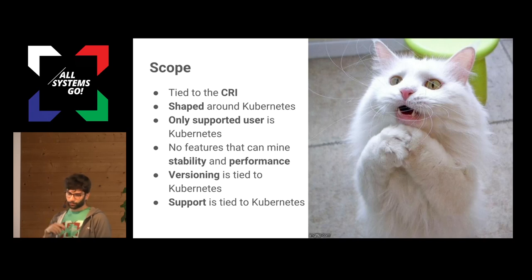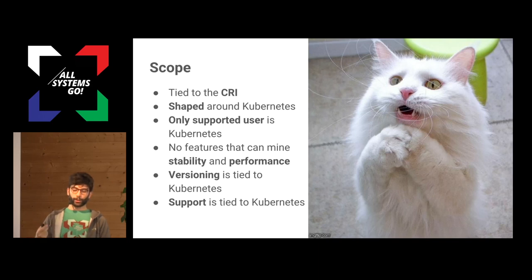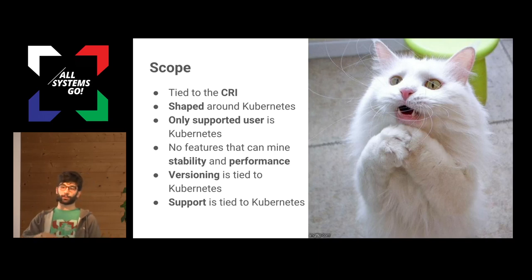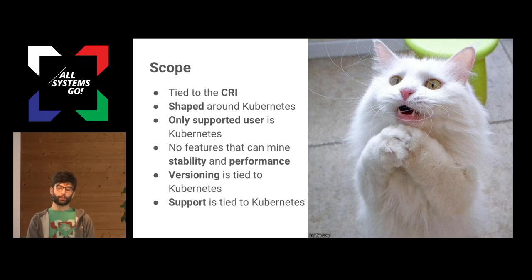So to narrow down the scope, the scope of Cryo itself is tied to the CRI. From release to release, if the CRI needs a new action to be implemented, we'll do that, and only that. Cryo itself is shaped around Kubernetes, and that means we know what Kubernetes needs as far as the container runtime is concerned. We know that there are certain actions like getting the image status or the container status which are recurring, and we are able to speed up those code paths in Cryo to make it faster. We will never add any features that compromise stability and performance, and we make sure for every release to not regress in performance.